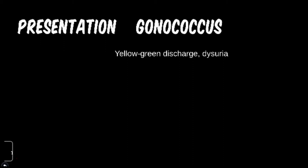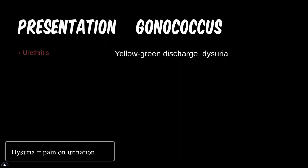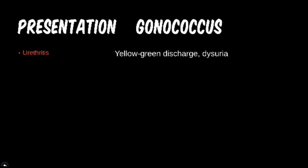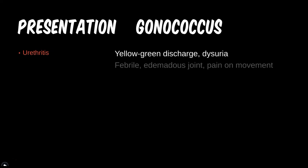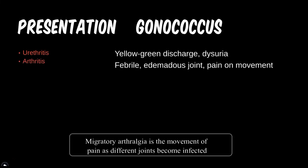For instance, when a patient displays yellowish-green discharge and dysuria, this is urethritis — an inflamed urethra. This is also why some STDs hurt during urination.